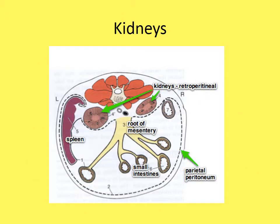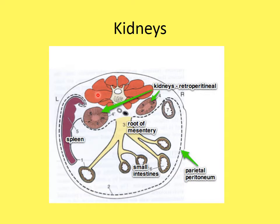This diagram shows a cross-section of the abdominal cavity. The spine is visible, and the dotted line represents the parietal peritoneum — the thin tissue lining the abdominal cavity. The kidneys lie just outside this peritoneum, right behind it, between that thin peritoneum and the abdominal muscles — which is why they're called retroperitoneal.